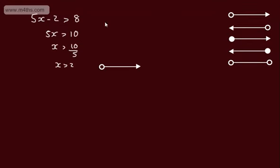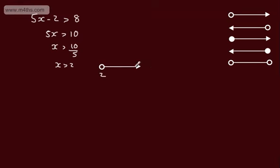If asked to express x > 2 on a number line, we locate 2, don't include it, and look at all values to the right. Let's test 0 — we know 0 isn't included, so we'd be in the right part. Is 0 minus 2 greater than 8? Clearly no, so we have the correct region. This boundary is often called the critical value, which you'll see more of in the quadratic examples. That's a nice straightforward linear inequality.